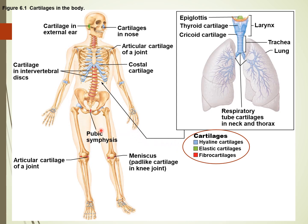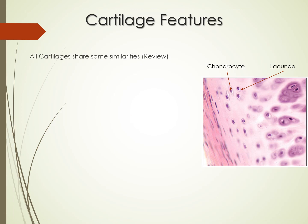Fibrocartilage is similar to hyaline cartilage but has a little more give and elasticity. It's found mostly in the intervertebral discs between your vertebrae, giving compression ability within your spine, as well as the pubic symphysis where your two pelvic bones come together. We also find fibrocartilage in the knee — some of you may have heard of athletes tearing their meniscus, which is a small disc that sits in the knee.